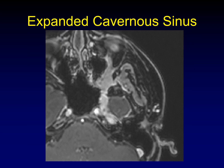If tumor spreading along a nerve reaches an area where it can expand — for example, the cavernous sinus or Meckel's cave — it will expand that cavity. Here is perineural spread along V2 coming through the cavernous sinus and expanding it compared to the contralateral side. The same thing happens in Meckel's cave.